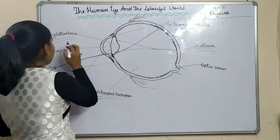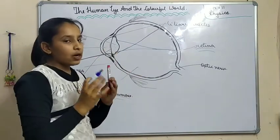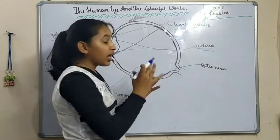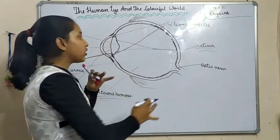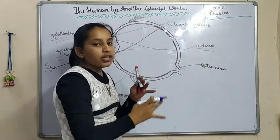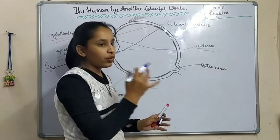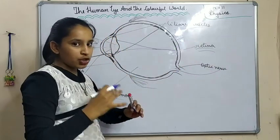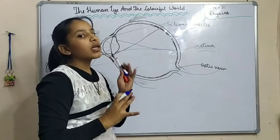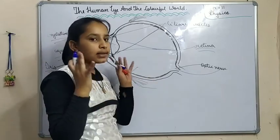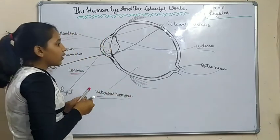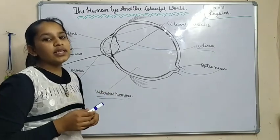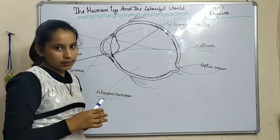The vitreous humor and aqueous humor are present here. These are also jelly-like fluids present in our eyes. When the image of an object is formed on the retina — which is real and inverted — the rods and cones present in the retina give a message to the optic nerve, and the optic nerve takes this message to our brain. The brain sees the object and tells us what it is. So we have completed the human eye, and in the next video we will see the power of accommodation and the defects of vision. Thank you.